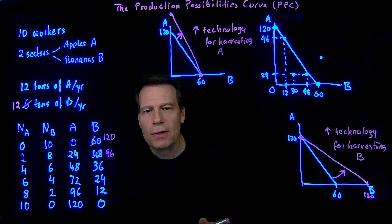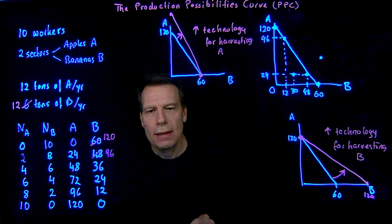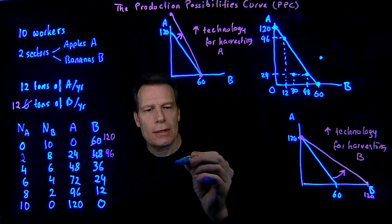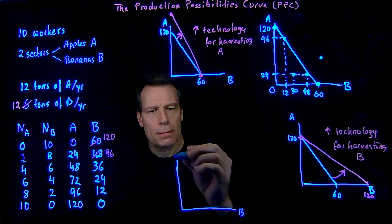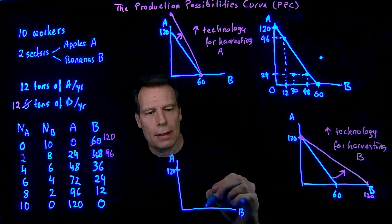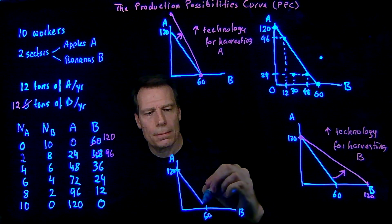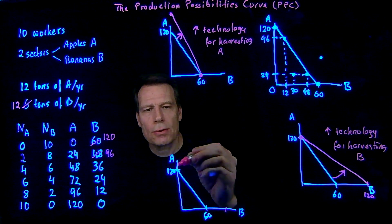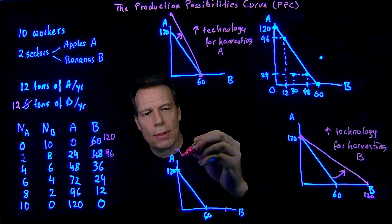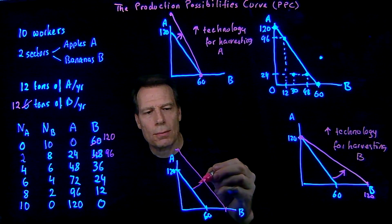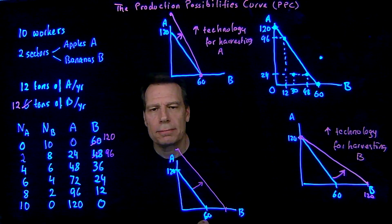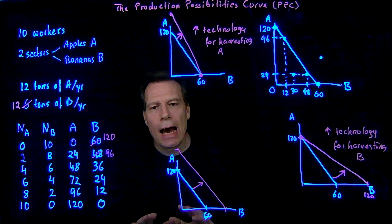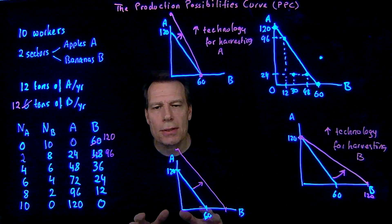Finally, we could ask what if there's a general change in technology — if we invent a machine that makes us more productive at harvesting both apples and bananas in exactly the same way. We could start with our initial production possibilities curve with 120 and 60 on the axes. But now if we allocate all workers to the banana sector, we'd produce more bananas; if we allocate all workers to the apple sector, we'd produce more apples. So we'd get a new production possibilities curve that is shifted outward from the original one. The production possibilities curve allows us to illustrate the productive capacity of an economy at any given time and how that capacity changes as the economy experiences changes in technology.